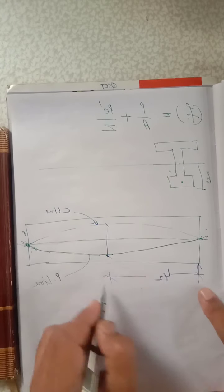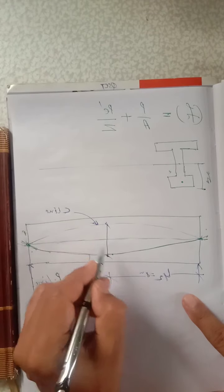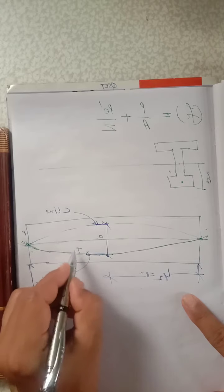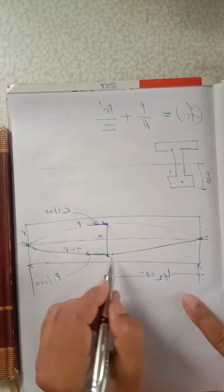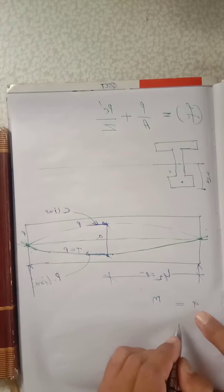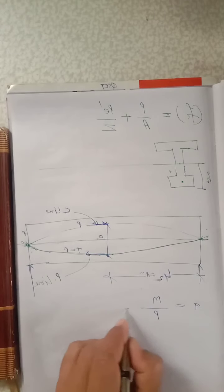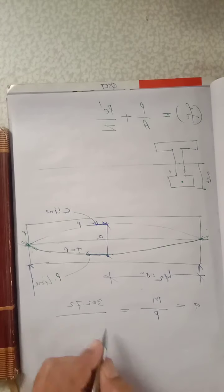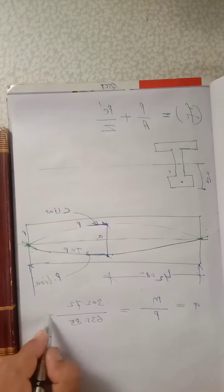At mid-span (L/2 = 8 m from support), the lever arm a = M/P = 302.72 / 635.85 = value in meters. This gives the shift of the C-line, which is used to find e' = e + a (or e − a depending on direction), enabling stress calculation using the second concept.